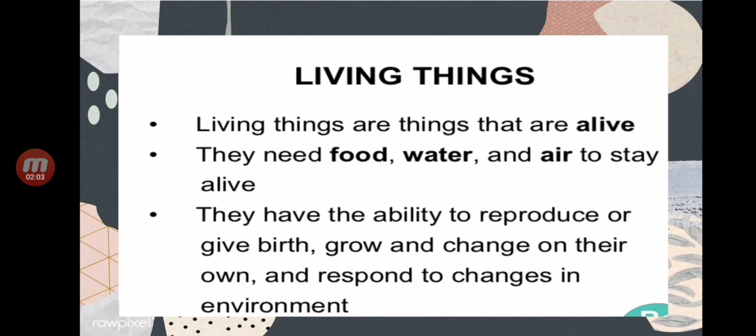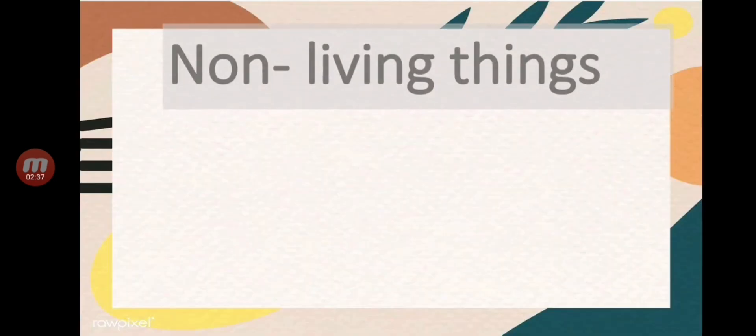Living things also have the ability to reproduce or give birth. They can make other living things. They also grow and change on their own, and they respond to changes in their environment. Those are the characteristics of living things. Now let's proceed to non-living things.